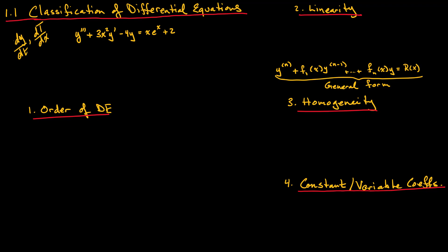Whereas a partial derivative is one where, for example, the temperature is a function of position in the x direction, the y direction, and maybe also with respect to time, and we are just taking the derivative with respect to, say, the y direction. This is what we call a partial derivative, but this is not what we are looking at in our study of ordinary differential equations.